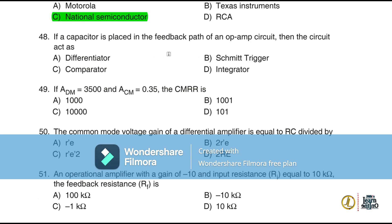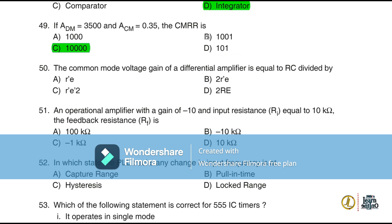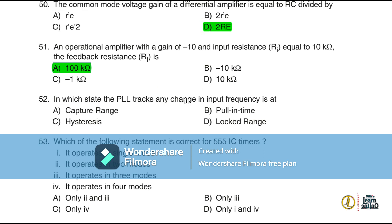Question 46: The incorrect statement regarding IC 741 is zero input impedance (option B). Question 47: If a capacitor is placed in the feedback path of an op-amp circuit, the circuit acts as an integrator (option B). Question 48: If ADM = 3500 and ACM = 0.35, then CMRR = ADM/ACM = 10,000. Question 50: The common mode voltage gain of a differential amplifier equals RC divided by 2RE. Question 51: An op-amp with gain of −10 and input resistance RI = 10 kΩ has feedback resistance RF = 100 kΩ (option A). In a PLL, the locked range is the state where it tracks any change in input frequency.